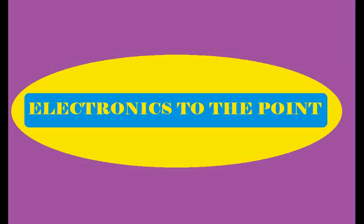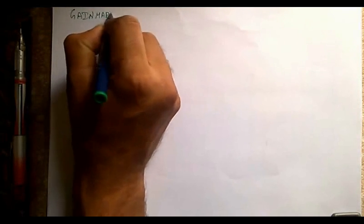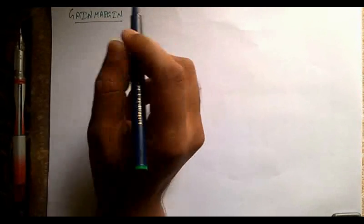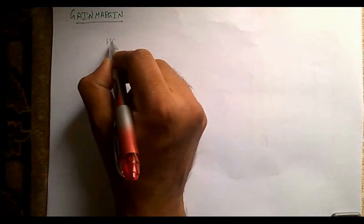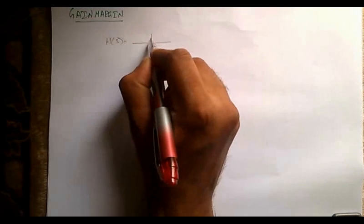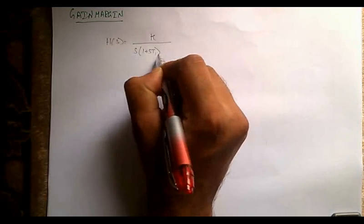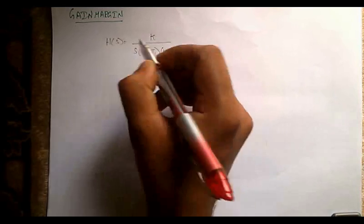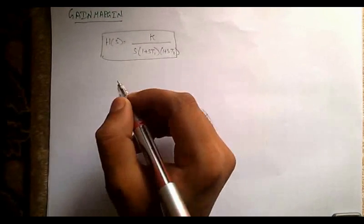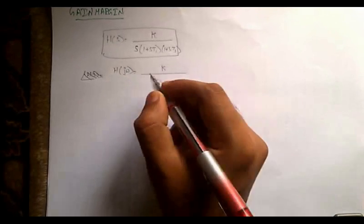Hi YouTubers, welcome to Electronics to the Point. Today we look at gain margin — how do we calculate gain margin for a given transfer function? We are given the open loop transfer function H(s) equal to K divided by s times (1 + sT1)(1 + sT2). To find the gain margin, we substitute s = jω.